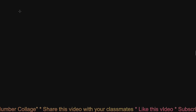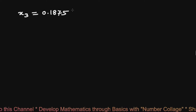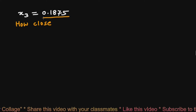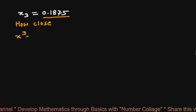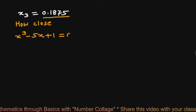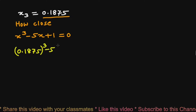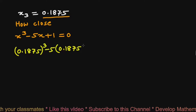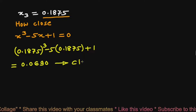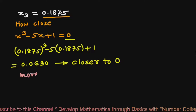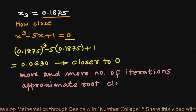After the third iteration, we found the root of x³ - 5x + 1 = 0 to be x₃ = 0.1875. Substituting this value into the algebraic equation gives approximately 0.0690, which is close to zero. If we perform more and more iterations, we will get the approximate root even closer to the true root.